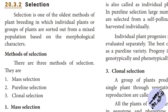What do we see in this video? Let's talk about selection. Selection is one of the oldest methods of plant breeding, in which individual plants and groups of plants are sorted out from a mixed population based on morphological characters.